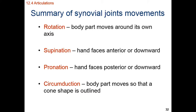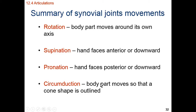We also have rotation — pivoting a body part around its axis. You can rotate your forearm to flip your hand back and forth, or rotate your neck to say no with your head. We also have supination and pronation. With supination, you have the palm of the hand facing anterior or upward. With pronation, you take the back of your hand and face it posterior or downward. Circumduction is spinning an appendage to outline the shape of a cone.